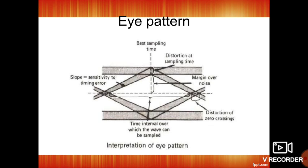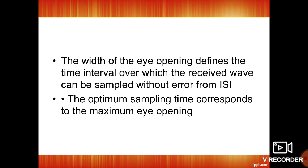In this diagram, the sensitivity of the system to timing error is determined by the rate of closure of the eye as the sampling time is varied. The height of eye opening at the specified sampling time is called margin over noise. As the effect of inter-symbol interference increases, the eye opening reduces. If the eye is closed completely, then it is not possible to avoid errors at the output.